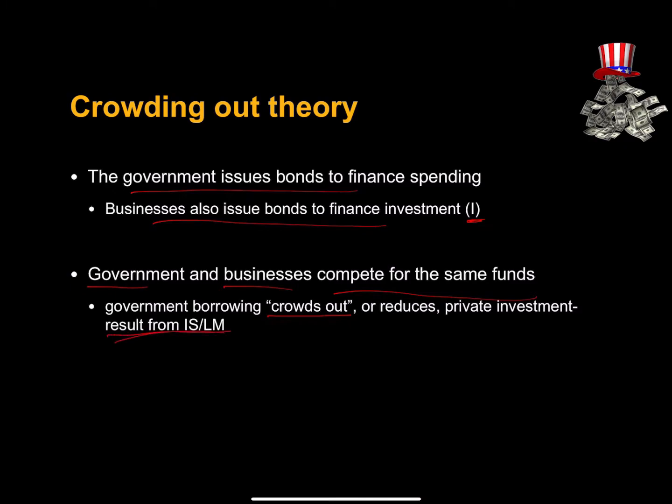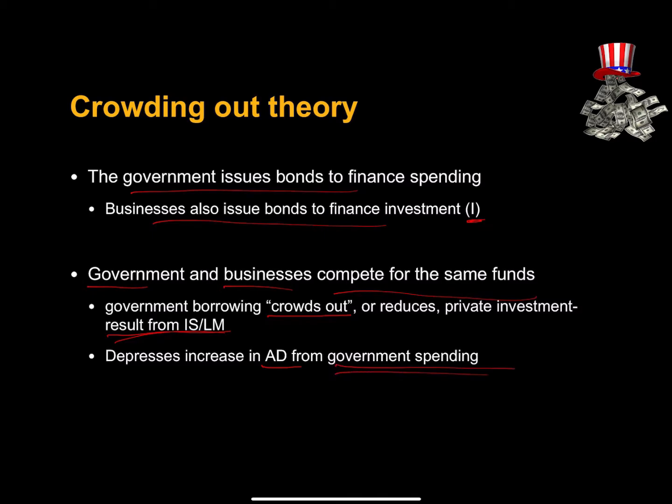Look at the IS-LM framework — it's a little more obvious there, but you don't need to understand that model to get the gist of crowding out. As a consequence, the increase in aggregate demand that could result from government spending — whether automatic stabilizers or discretionary spending — isn't as big as it otherwise would be.